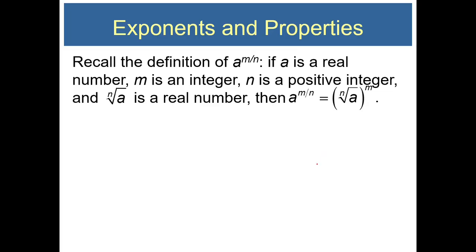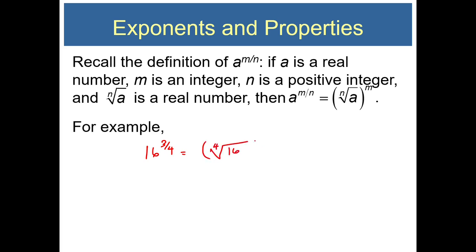Recall the definition of a raised to the m over n. If a is a real number, m is an integer, n is a positive integer, and the nth root of a is a real number, then a raised to the m over n is equivalent to the nth root of a raised to the m power. For example, 16 raised to the 3 fourths power is equivalent to the 4th root of 16 raised to the 3rd power. The 4th root of 16 is 2, so we have 2 cubed, which is 8.